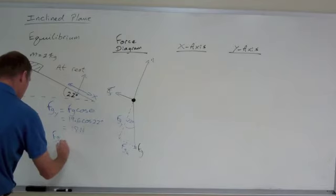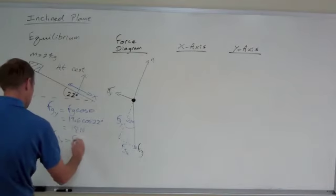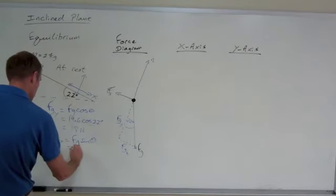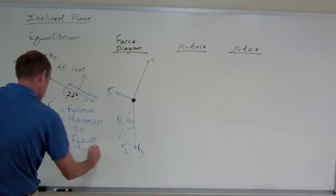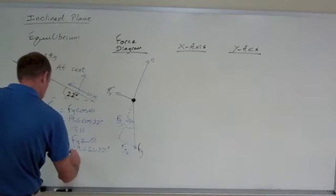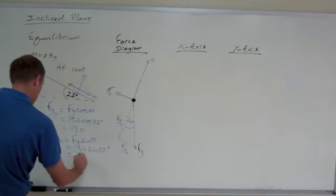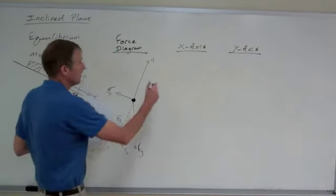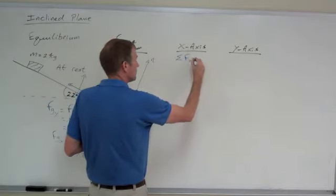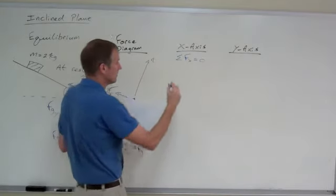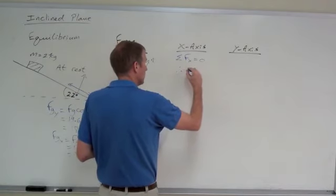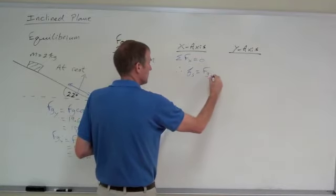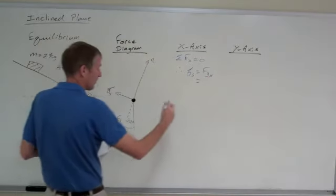FGX is FG times the sine of the angle, 19.6 sine 22 degrees is 7.3 newtons. In the x-axis, net force in the x-axis is equal to zero because this is at rest. Therefore, the downhill force equals the uphill force, so static friction equals FGX, which is 7.3 newtons.